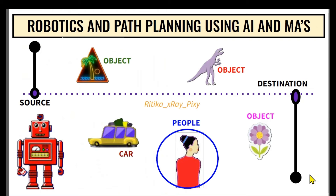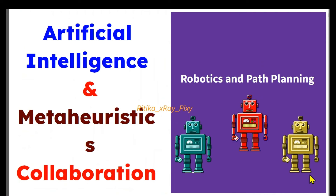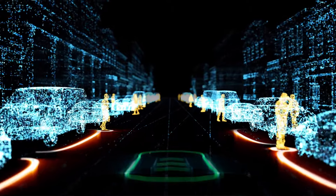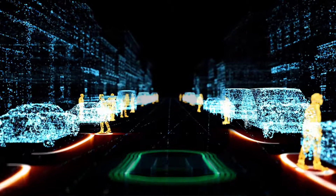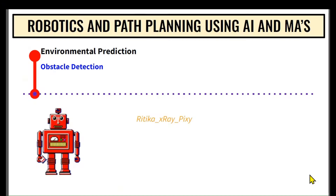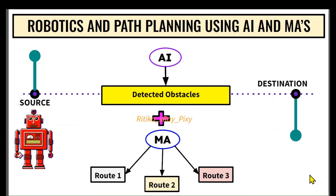We have to move the robot from a source to a destination with a number of obstacles in between that the robot needs to avoid. Robot path planning can be difficult and challenging because the environment can be dynamic — obstacles can appear, disappear, or move over time, such as cars, people, and other objects. Combining artificial intelligence and meta-heuristics can greatly improve the robot's ability for effective navigation in such environments.